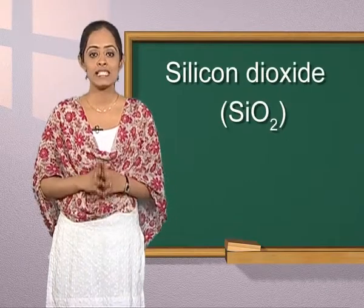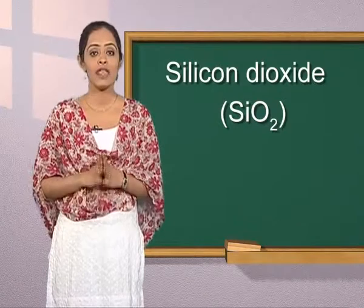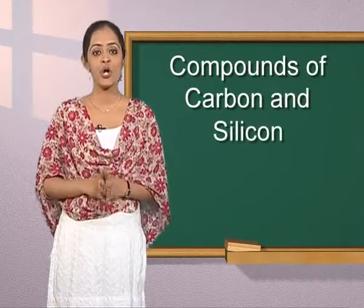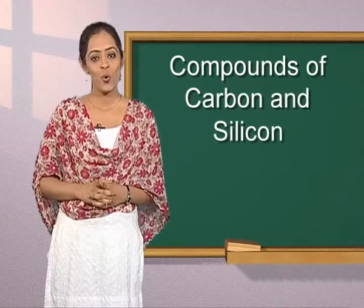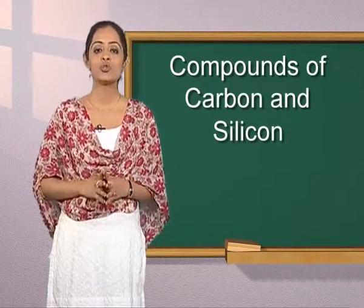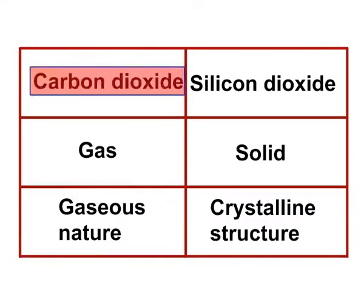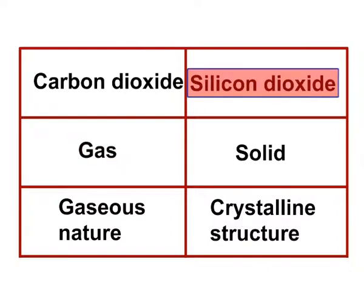Silicon dioxide, commonly known as silica or sand, occurs in a number of crystalline forms. Out of these, quartz, cristobalite, flint, and tridymite are some common forms which are interconvertible at certain suitable temperatures. Silicon dioxide or silica is a covalent three-dimensional network solid in which each silicon atom is linked to four oxygen atoms through covalent bonds. This leads to giant eight-membered rings as shown on screen.